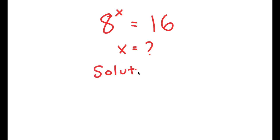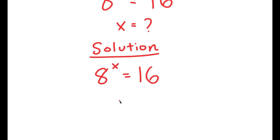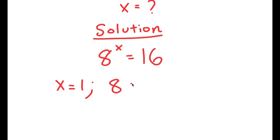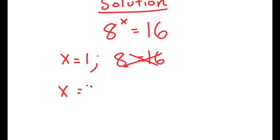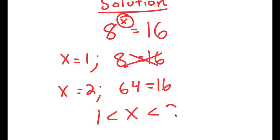For my solution, I'll start by rewriting my equation: 8 to the power of x is equal to 16. Before doing anything, let's inspect this problem. If I plug in x equals 1, I get 8 to the power of 1 is equal to 16, which gives 8 equals 16 — false. If I plug in x equals 2, I get 8 squared equals 64, so 64 equals 16. Notice the big gap between 8 and 64, so x is not a whole number but a decimal somewhere between 1 and 2. So x is greater than 1 but less than 2.